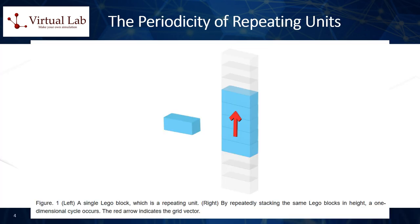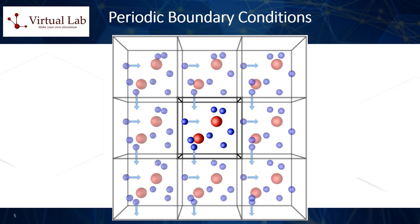In solid physics, the key criterion for determining the dimension of a material with a crystalline structure is periodicity. When you repeatedly stack the same Lego blocks on top of each other, it only increases the height of the structure. In this way, if you continue to build blocks larger than the size of the individual Lego blocks, it creates a one-dimensional cycle that repeats in just one direction. To aid in mathematical modeling, periodic boundary conditions are introduced, although every solid crystal inherently possesses a surface.